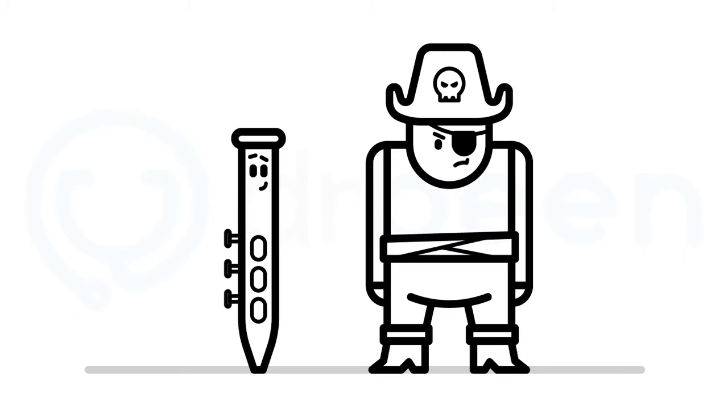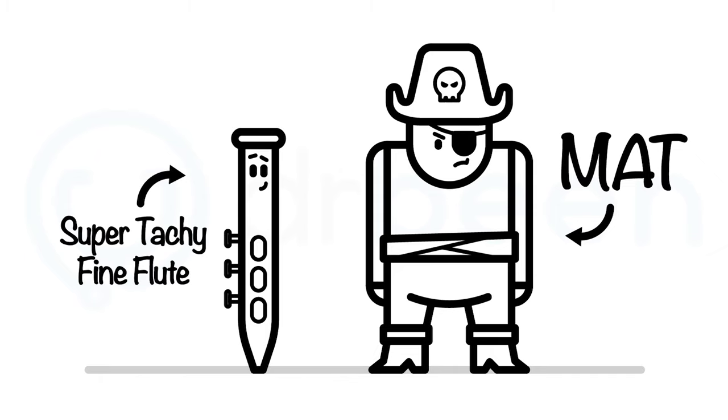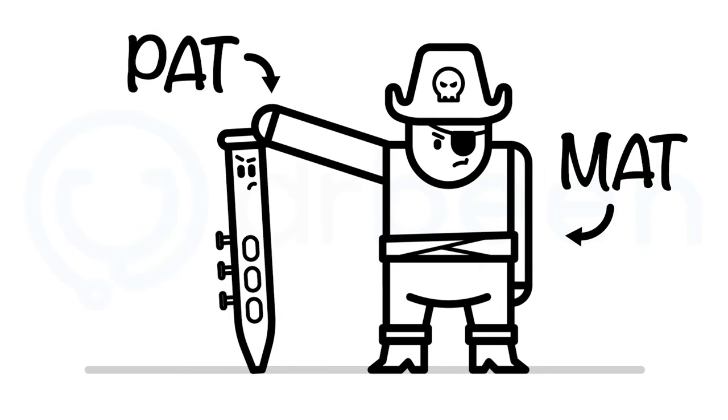For visual learners, here is a guy, Matt, playing a fine flute. To remember this to be atrial arrhythmias, imagine them both standing and shivering in the cold of the atria land. You can remember these by this fun mnemonic: Powerful and super very tacky fine flute disliked Matt's pat.